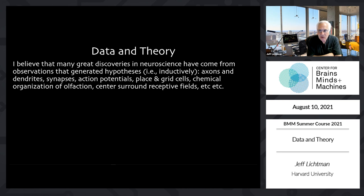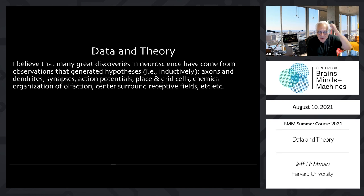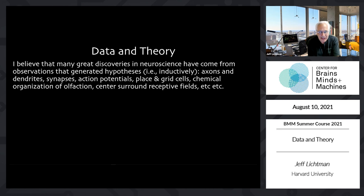The idea that there are two types of processes coming off nerve cells — axons that send information and dendrites that receive them — wasn't that someone cooked up the idea and then looked in a brain and found they were right. It's that people, starting with people like Cajal, saw these distinctly different processes sticking out of cells and after some work could figure out that one was receptive and the other was sending information away. Similarly, it wasn't that someone thought up synapses — people saw synapses and that then generated a theory of what they were doing. Action potentials were not inferred from theory; they were seen and then theory explained them.